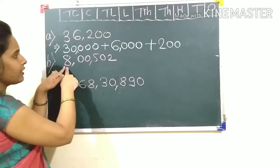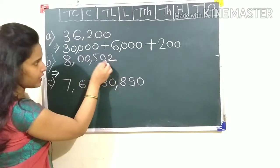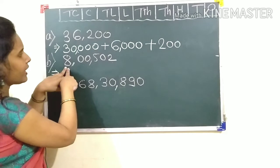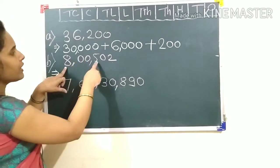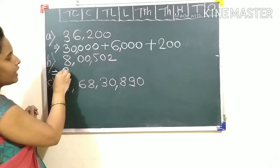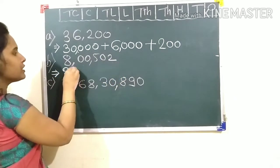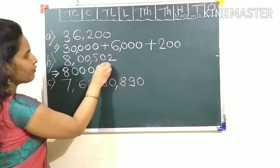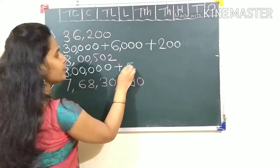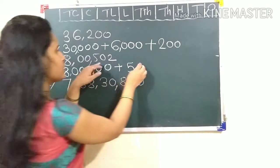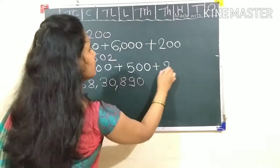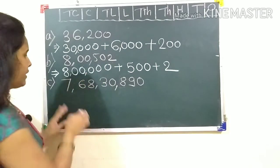Next, this number is eight lakh. One, tens, hundred, thousand, ten thousand, lakh. Means this is eight lakh. So eight with five digits after it gives us 8,00,000. Plus five with two digits is 500. Plus two with no digits is just 2.